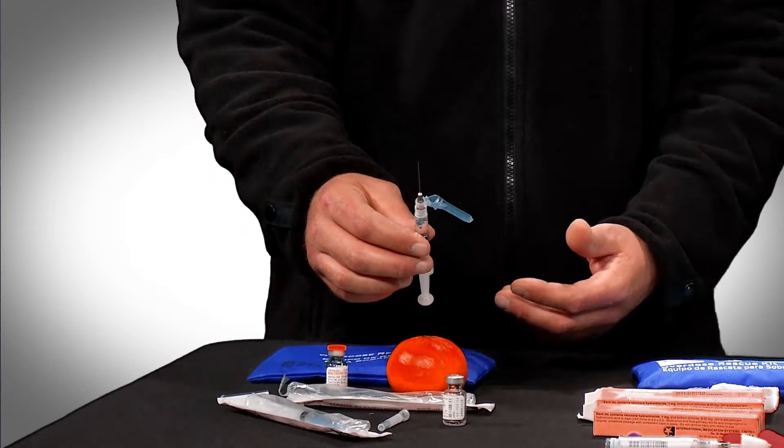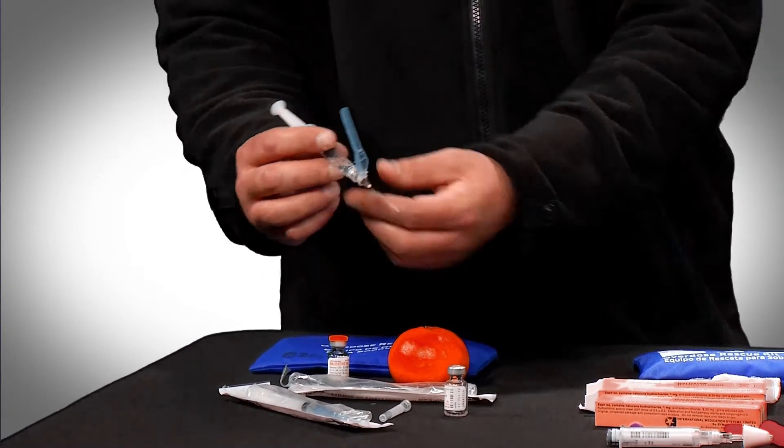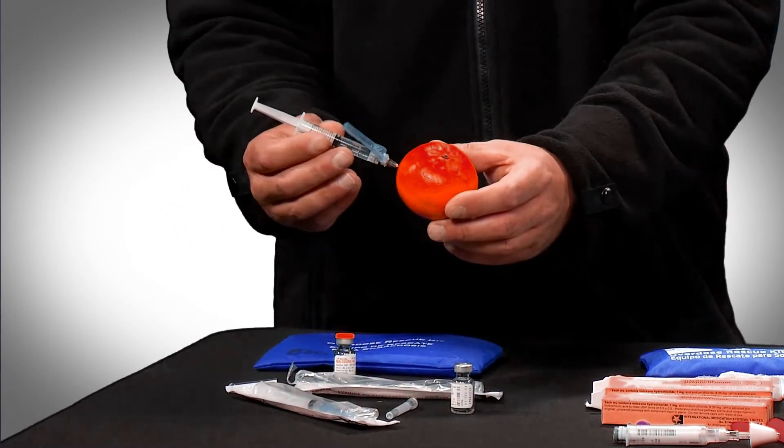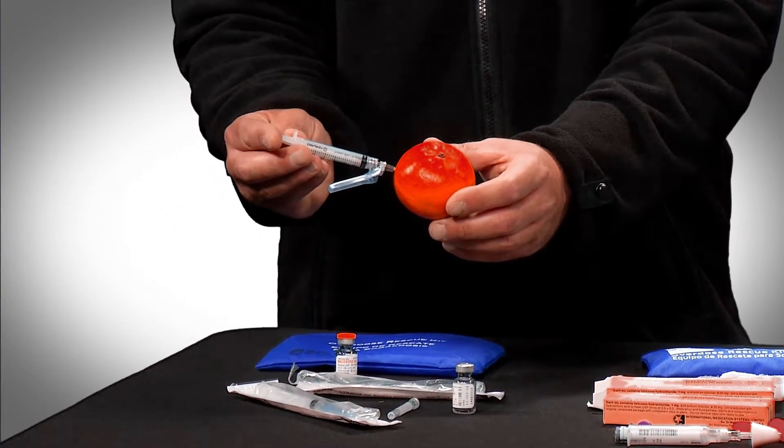You can go right through a person's clothing, and you don't have to worry about that air. So you just do a quick jabbing motion and insert the entire contents of the syringe into the person.